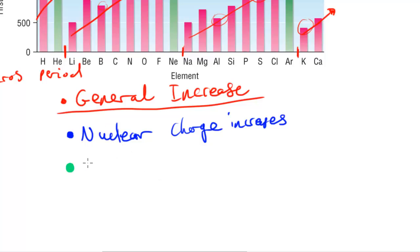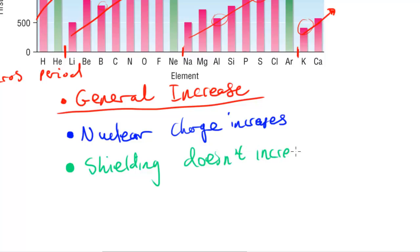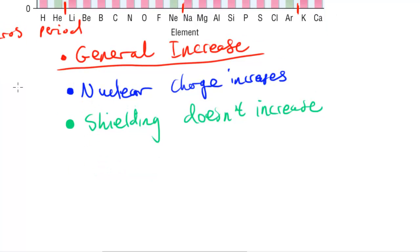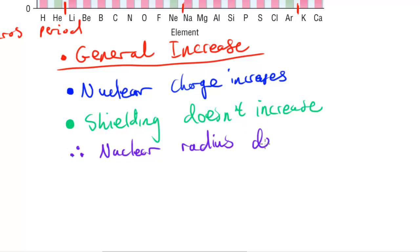Because the electrons are added onto the same shell, the shielding doesn't increase. So because the nuclear charge increases and shielding doesn't increase, what happens is the atomic radius therefore decreases. These two points lead up to this final conclusion.